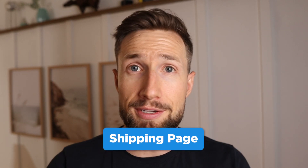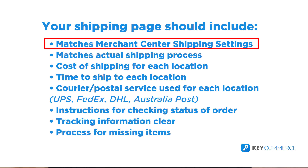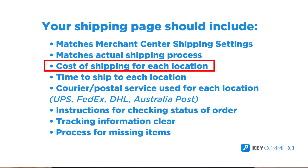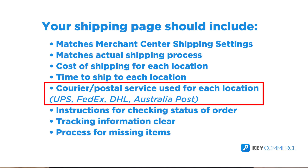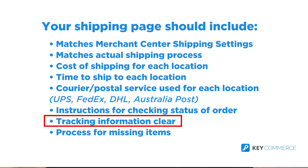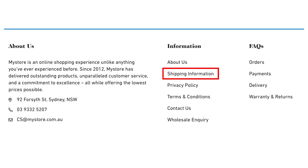Next we have our shipping page — the page that tells customers all about our shipping policies. Make sure that this matches what's in your shipping settings in Google Merchant Center and what your actual shipping process is. Outline the cost of shipping for each geographical location you ship to, the time to ship, and the postal service used like UPS, FedEx, or DHL. Make sure it's clear how the customer can check the status of their order and whether they receive tracking information. I also recommend adding a section for missing items. Once done, add a link to your shipping policy page in your footer and on your product pages.